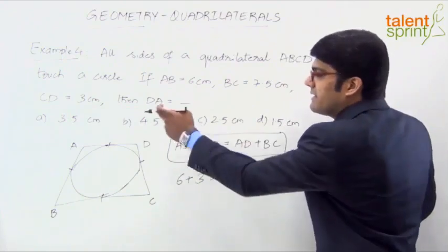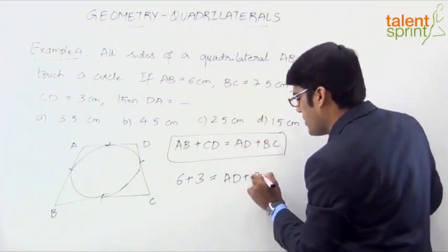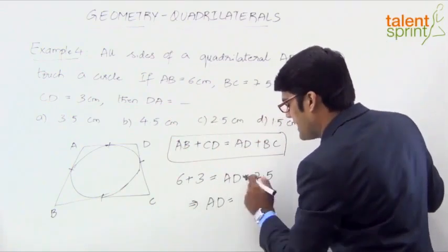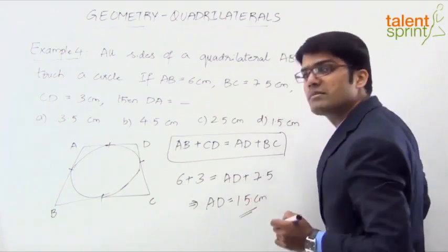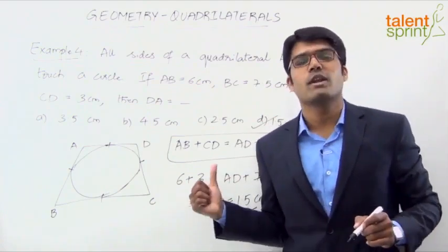AD is to be calculated. DA or AD. So AD plus, what is the value BC here? BC is 7.5. So from this we can see AD will be equal to 6 plus 3, 9 minus 7.5, which is 1.5 centimeters. So very simple calculation. Should not take more than 5 seconds for you to arrive at the answer.